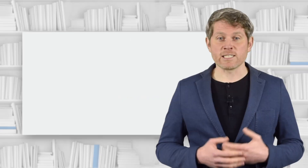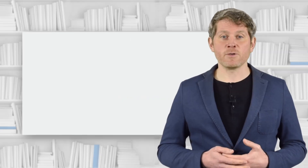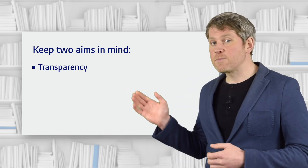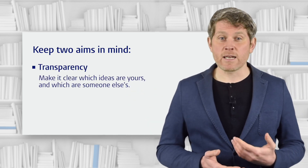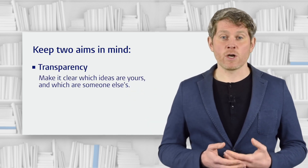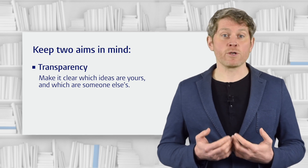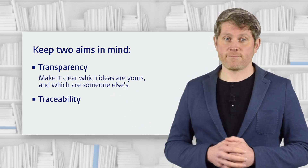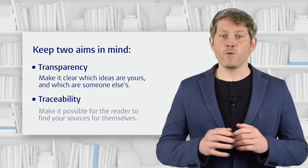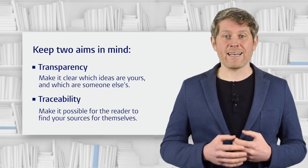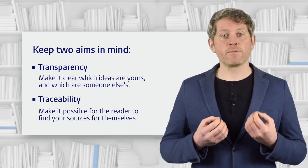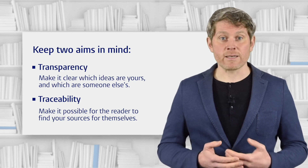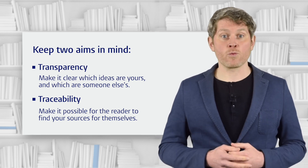When we integrate sources into our writing, we want to keep two clear aims in mind. Transparency — it needs to be clear to the reader which ideas are yours and which are someone else's. Traceability — you need to give the reader the information they need to be able to check your sources. If they can do that, they can evaluate and build on your work.